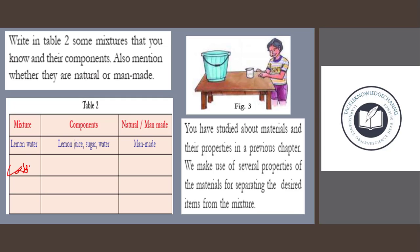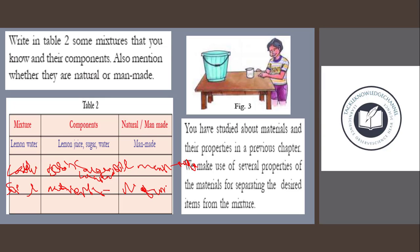Next, besan laddu — components are basin, sugar, oil, and water. This is man-made. Natural example: soil — components are soil, water, and nutrients. This is natural. Concrete — made from sand, stone, cement, and water. This is man-made.